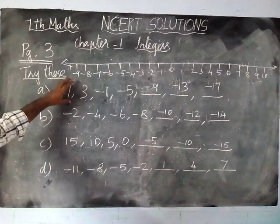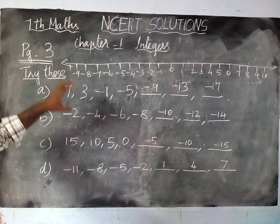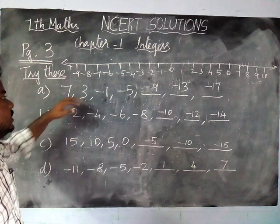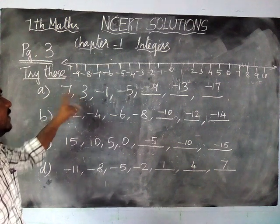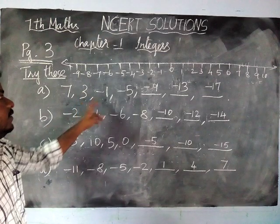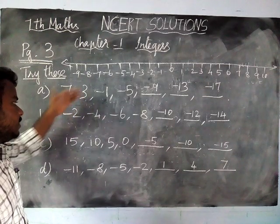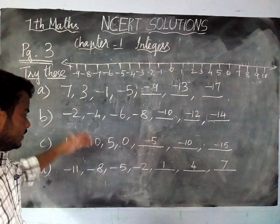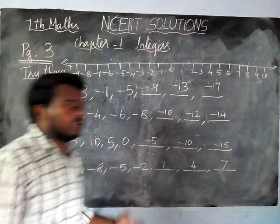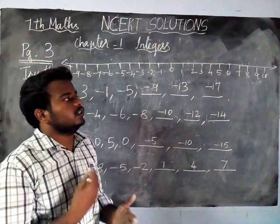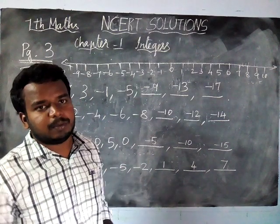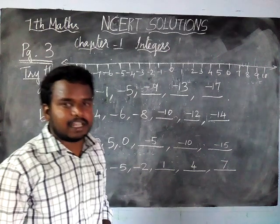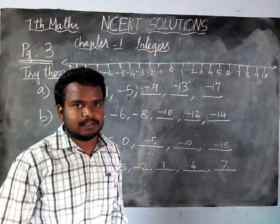We found the common difference using the number line. First pattern difference is 4, second is 2, third is 5, and fourth is 3. If you have any doubts, write in the comment box. If you like this channel, please subscribe and share with your friends. Thank you.